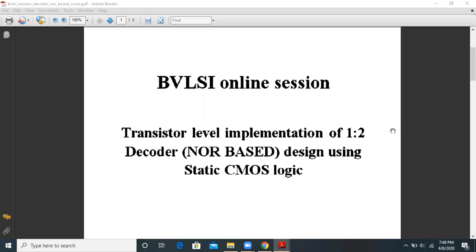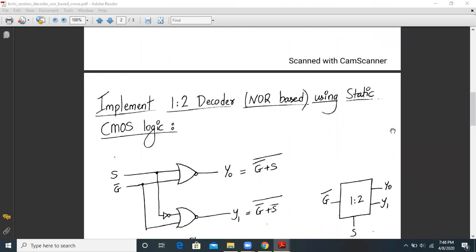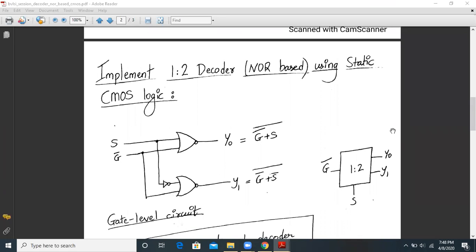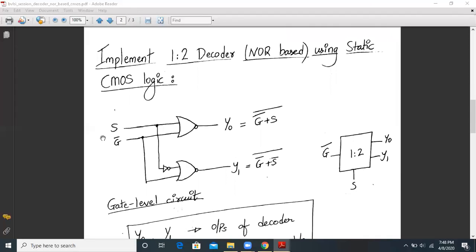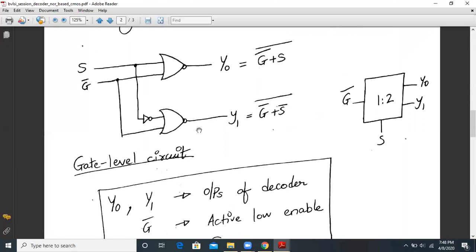So let us go back to the gate level schematic. A 1:2 decoder NOR-based design gate level schematic is as follows. It has one active low enable, one input in terms of S, and it has two outputs, Y0 and Y1. This is my gate level schematic of the same.